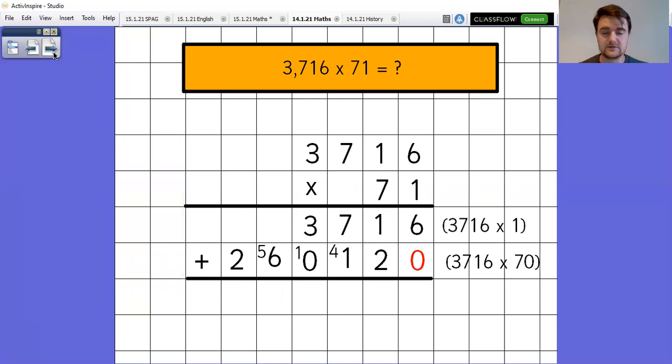Then all I've got to do is add those numbers together. Six and zero is six. One and two is three. Seven and one is eight. Three and zero is three. And then we've got our six and our two are standalone, which gives me my answer of 263,836.